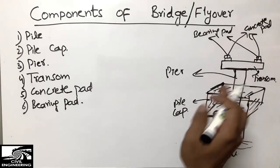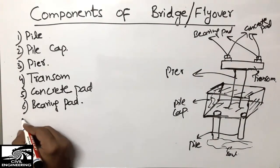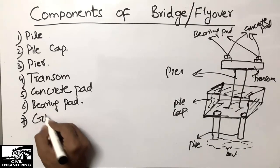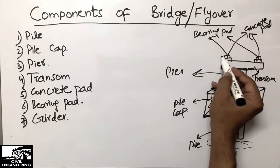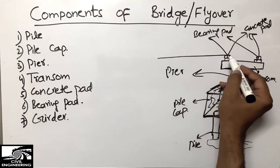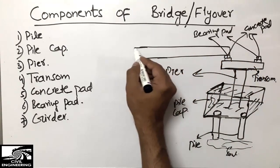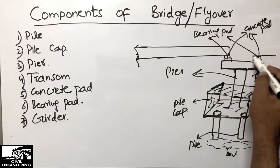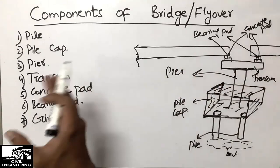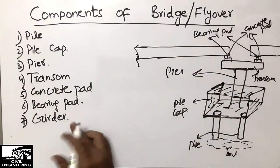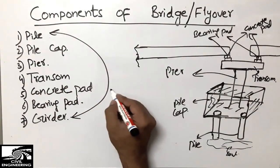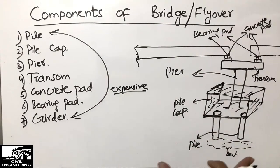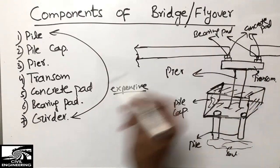After the bearing pad, we place the most important and most expensive element of the bridge: the girder. We place the girder above the bearing pad and concrete pad. Depending on the design, it may be rectangular, trapezoidal, U-shape, or a box girder. The pile and the girder are the two most expensive elements in the whole construction of a bridge or flyover.